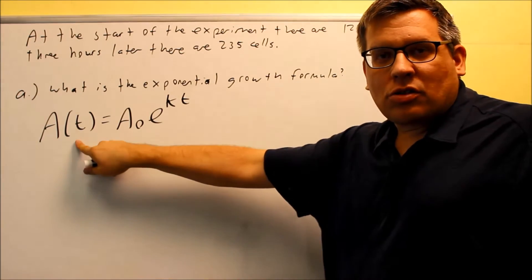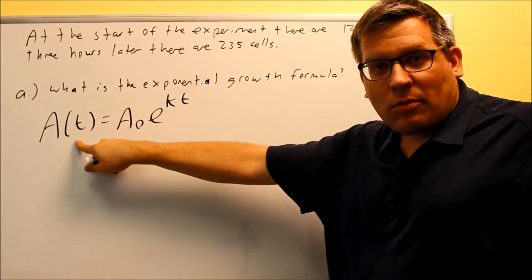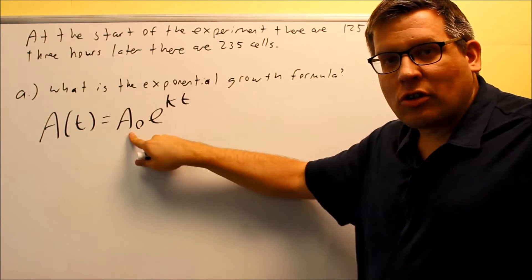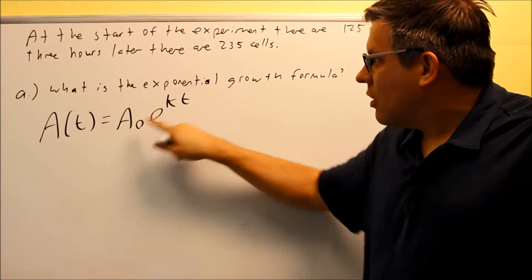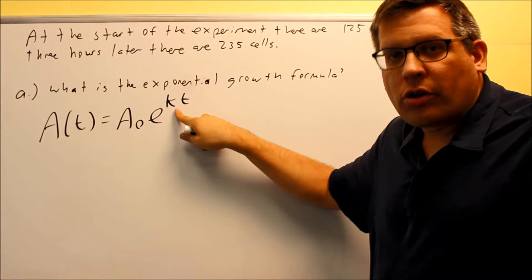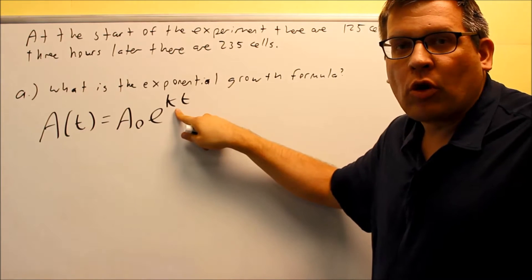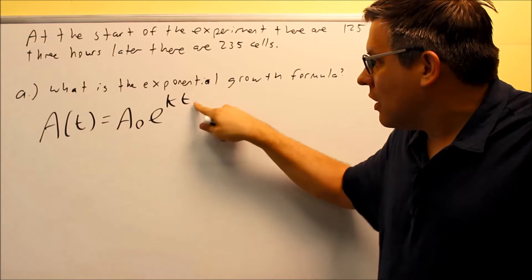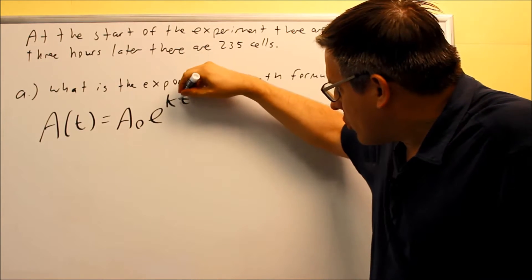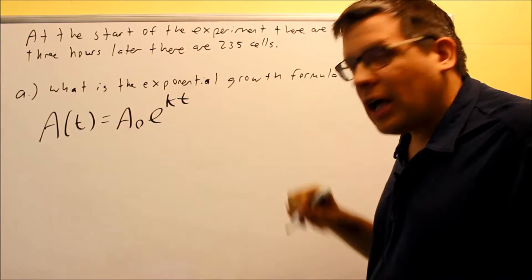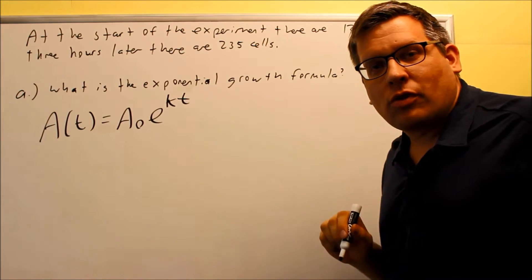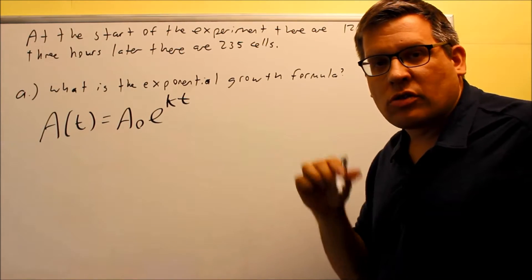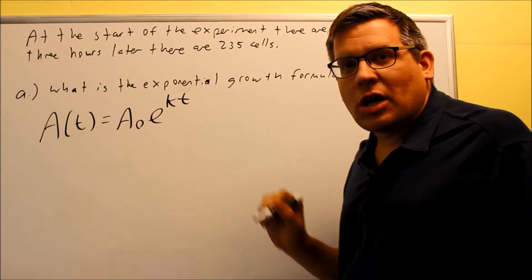This is your population at a certain time t. The A₀ is your initial population. The k is your growth or decay constant. If your k is positive, you have growth. If it's negative, you have decay. And then you have your t, which is your time. That could be in terms of any amount of time. It could be seconds, hours, days. Any unit of time works for that one.